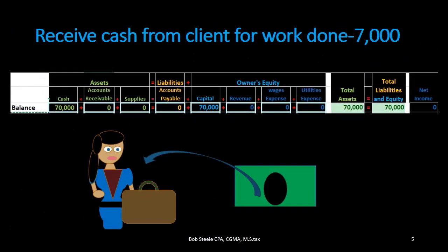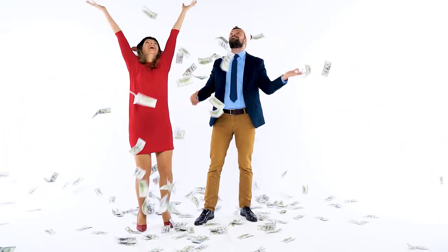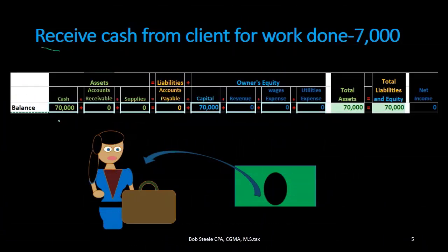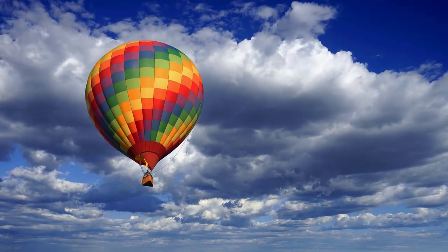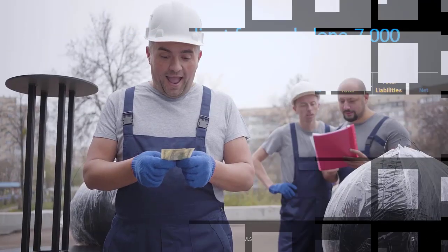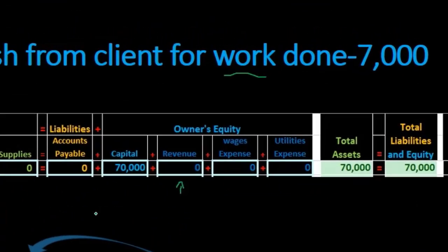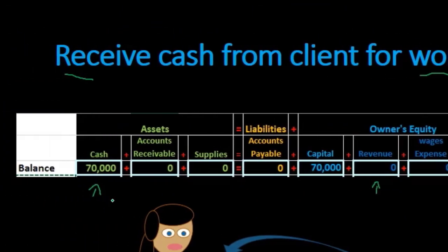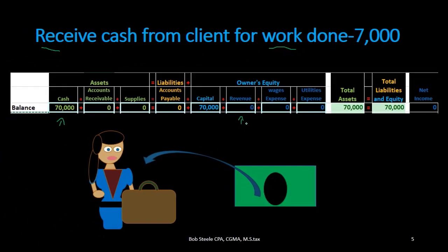Next transaction: we received cash from a client for work done, $7,000. Is cash affected? The keyword is 'received,' so cash is increasing. If cash goes up, we need to know what other account is affected — why are people paying us cash? Because we did work. When we do work we earn revenue. Revenue is part of the equity section: if assets go up, equity must also go up, so revenue goes up.